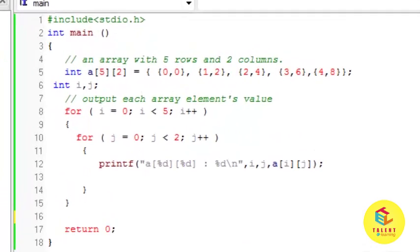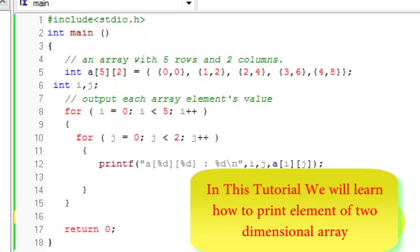So now we know how to initialize array. In previous tutorial we have learnt how to initialize the two dimensional array at a time of array declaration. Now in this tutorial we will print that element which are stored in two dimensional array using the for loop. I have written one program to do this.